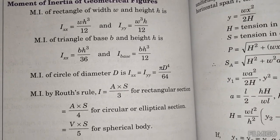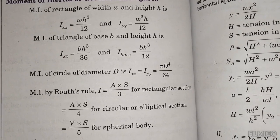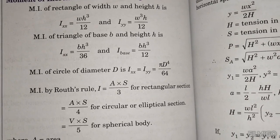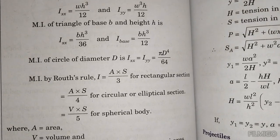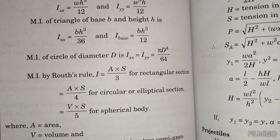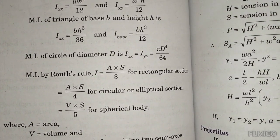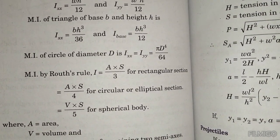For a circle: I about the diameter equals pi d to the power 4 divided by 64. Section modulus Z equals I divided by y_max. For a rectangular section Z equals bd squared divided by 6; for a circular section Z equals pi d cubed divided by 32.